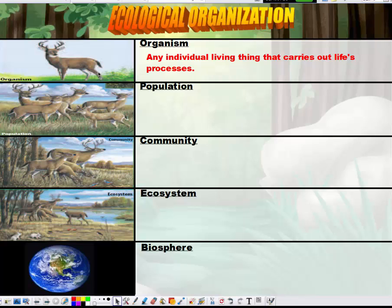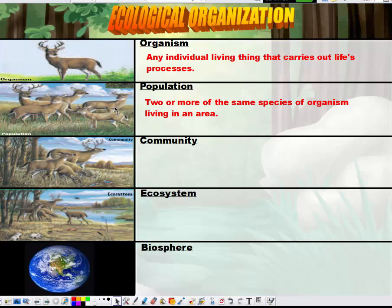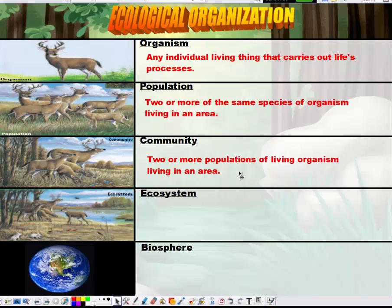Next, we move up to population. A population is essentially a group of organisms of the same species living in an area — for example, all the deer in a picture. Then we have community. Community is where we have two or more populations of living organisms in an area. So in a picture you might see a population of deer, a population of birds, a population of the same species of trees, a population of the same species of grass — all of those together make up the community.